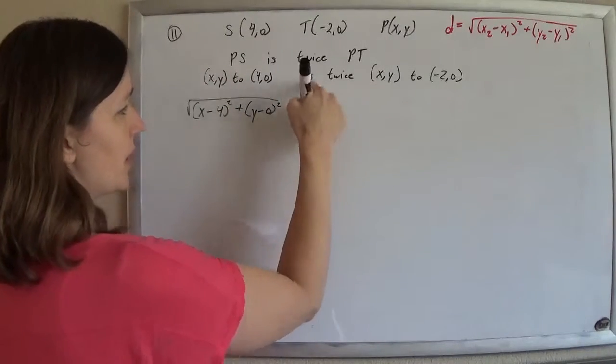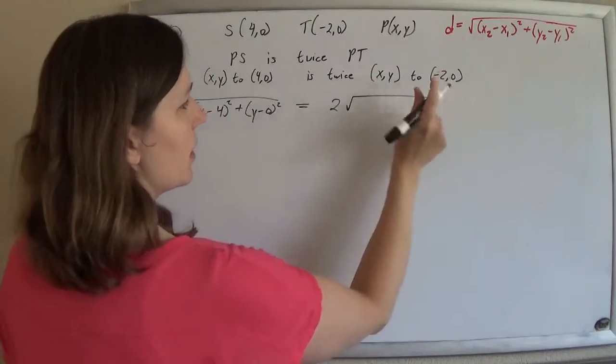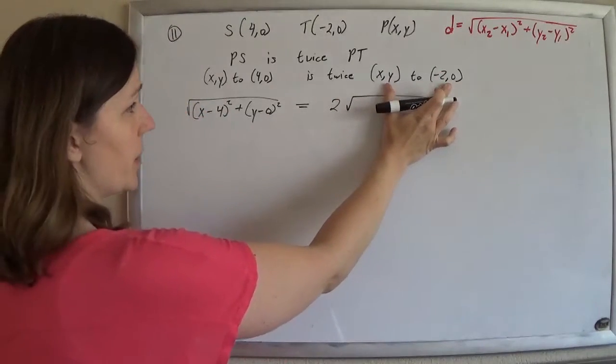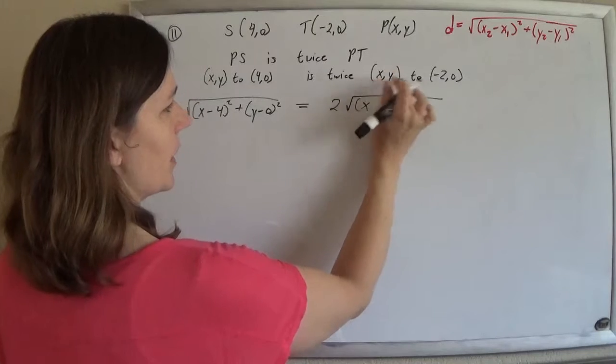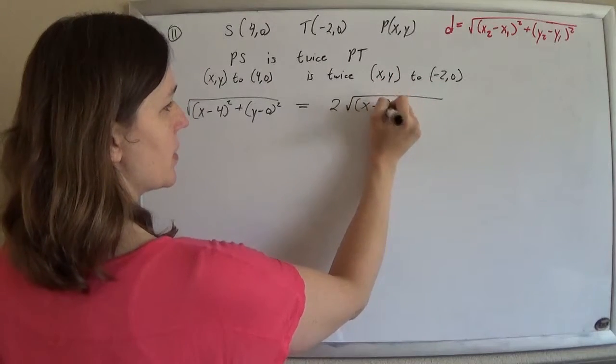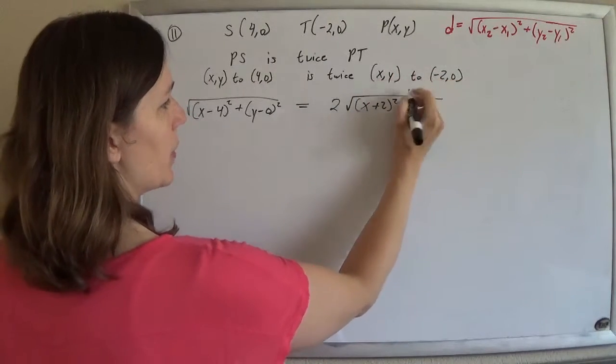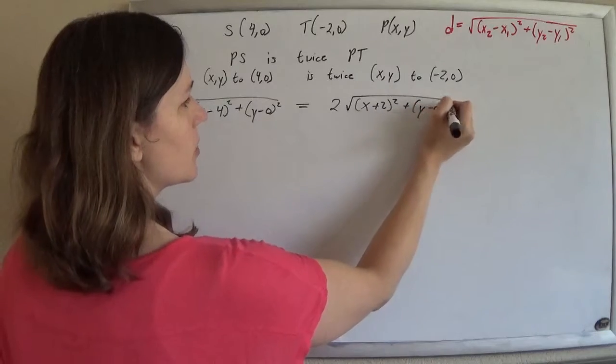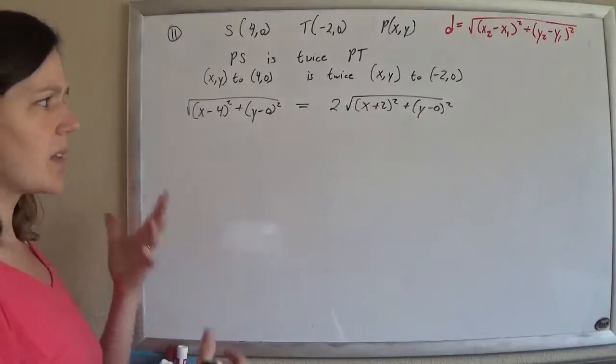And that's supposed to equal twice the distance from here to here. So subtract those x's - x minus negative 2 is x plus 2, square it, y minus 0, square it.